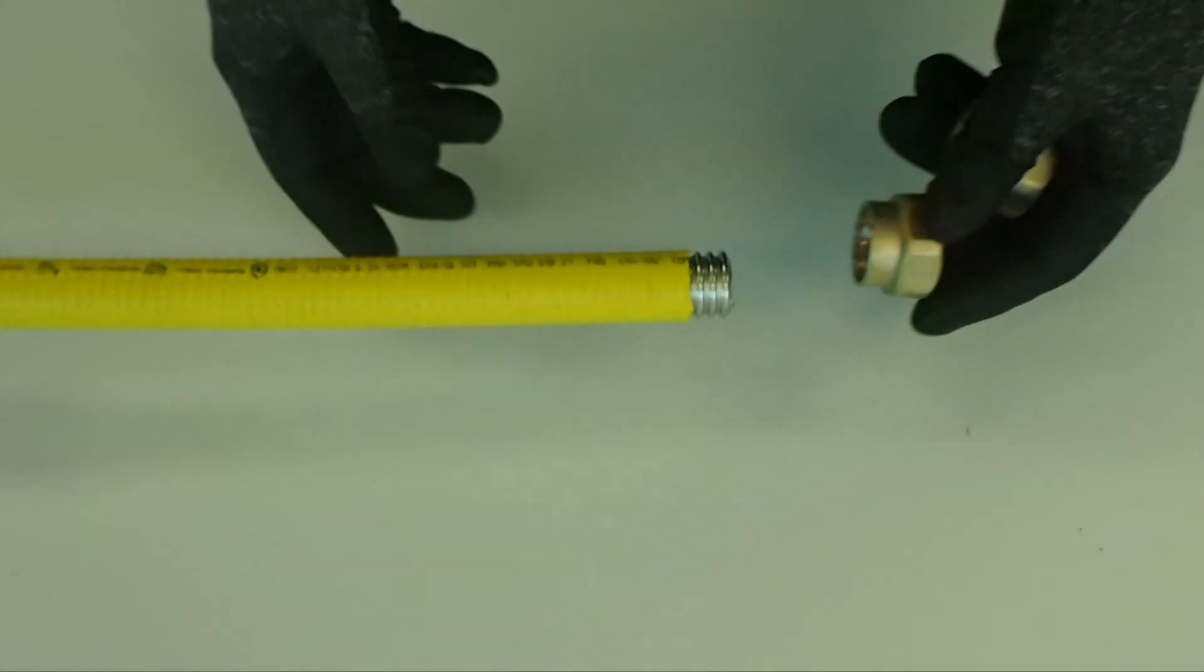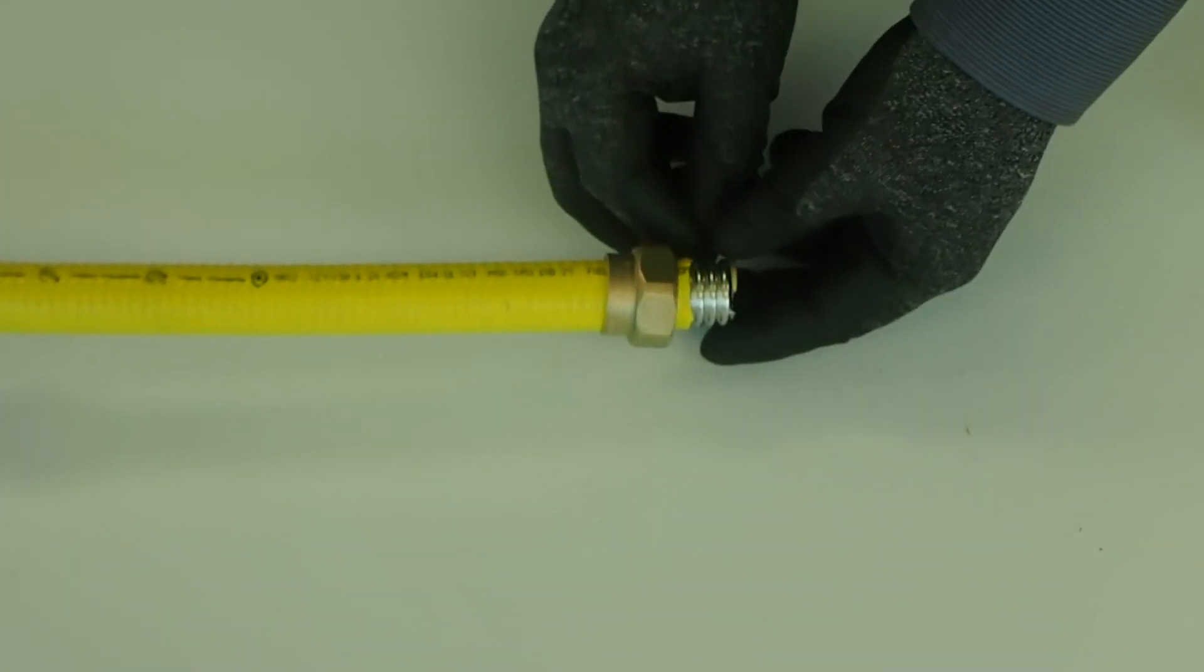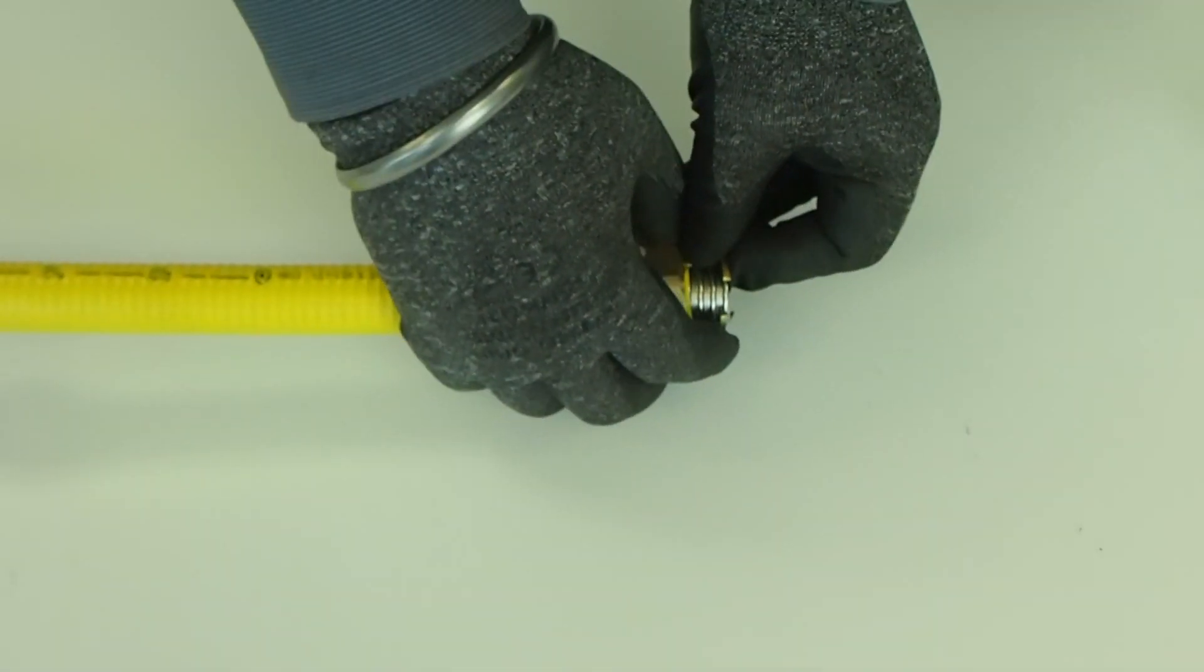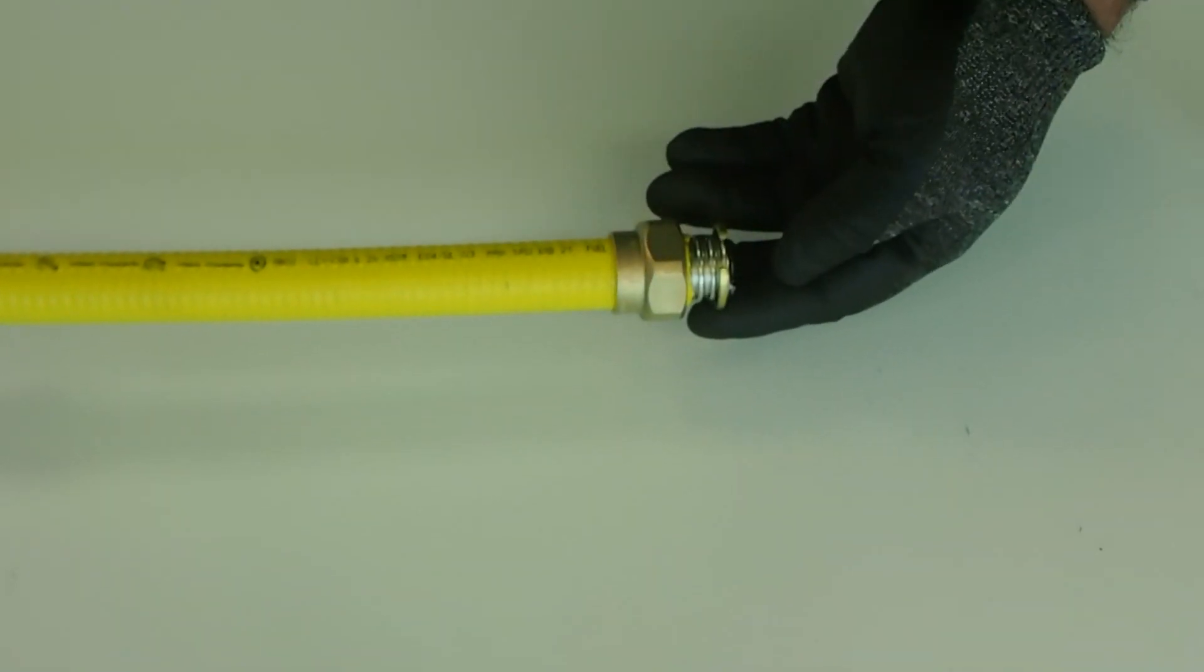Slide the flange nut over the tubing with the threaded end pointing towards the cut end of the tubing, being careful not to dislodge the O-ring inside the nut. Do not push the nut beyond the catch of the jacket. The flange should cover the yellow jacket.